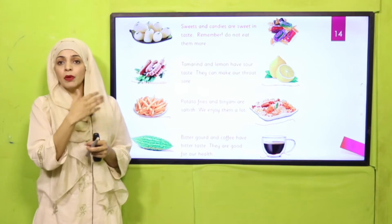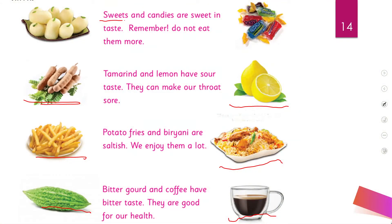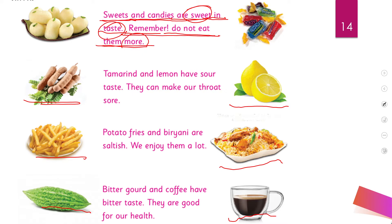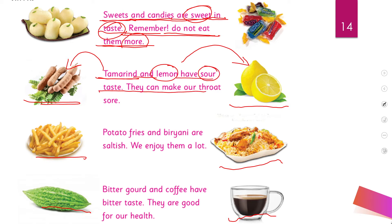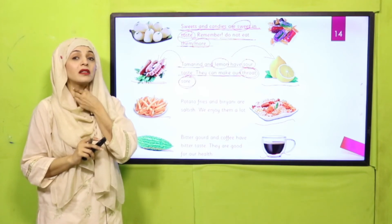Now put your fingers where I'm reading. Sweets and candies are sweet in taste. Remember, do not eat too many — otherwise you will have tooth decay. Tamarind and lemon have sour taste. They can make our throat sore. Do not eat too much sour food.